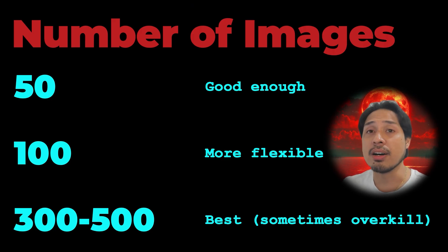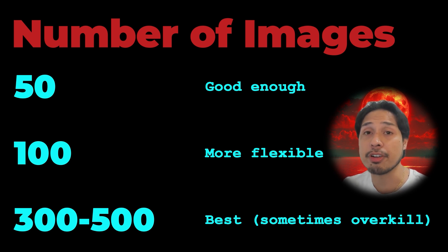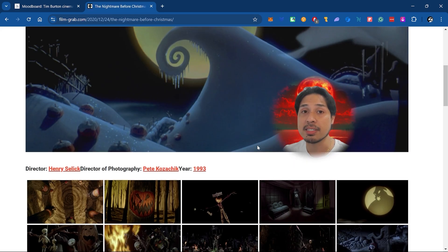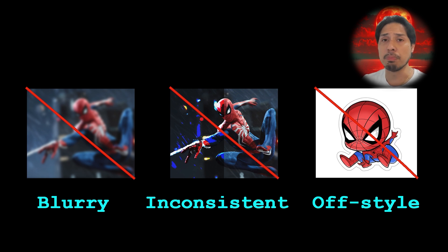How many images do you actually need? 50 are usually enough to create a good art style model, but more images provide better flexibility — more data allows Midjourney to understand the style. I usually opt for 300 to 500 images, which works better across different compositions and prompts. Quality over quantity though: 50 high-quality images work better than 500 low-quality ones. If your dataset is filled with blurry, inconsistent, or off-style images, your generations are going to suffer for it.